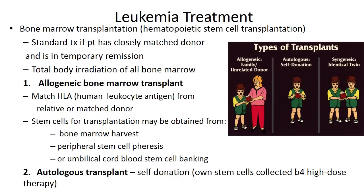The general leukemia treatment is a bone marrow transplant or hematopoietic stem cell transplant. It is the standard treatment if the patient has a closely matched donor and is in temporary remission. Types of transplants include allogeneic from a family member or unrelated donor, autologous using the patient's own stem cells collected before high-dose therapy, and syngeneic from an identical twin — all requiring an HLA (human leukocyte antigen) match.